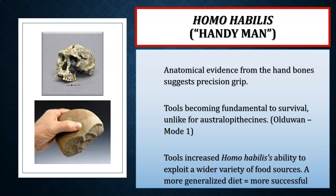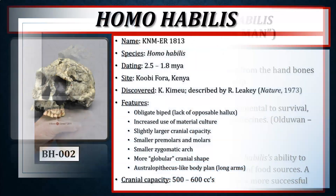Tools increased Homo habilis's ability to exploit a much wider variety of food sources, enabling a more generalized diet. A generalized diet is more successful because if one food resource becomes unavailable, you can quickly switch to another. This adaptability is hypothesized as a main reason genus Homo was more successful than the australopithecines — a more generalized diet, stone tool use, and later the control of fire, migration out of Africa, and symbolic expression.